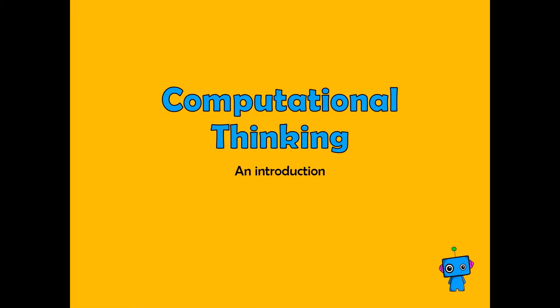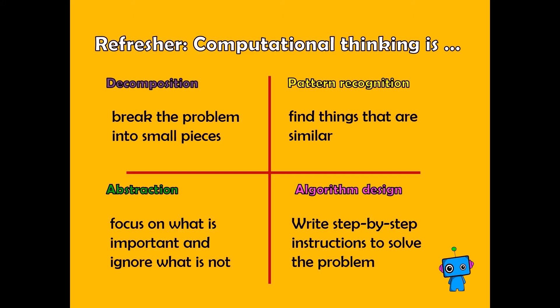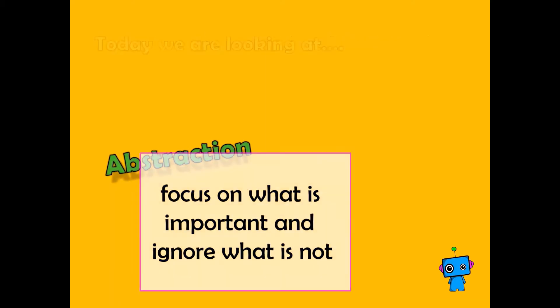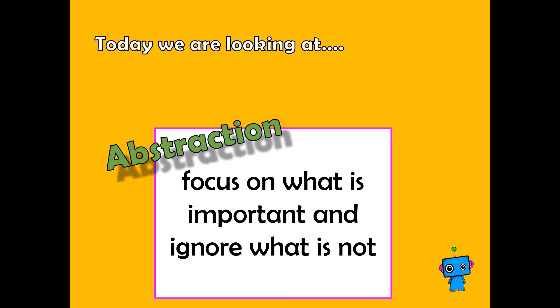Welcome back to the Introduction to Computational Thinking. As you remember, we've looked at composition, pattern recognition, algorithm design, and abstraction as the four elements of computational thinking. For this session, we are going to focus on abstraction — that is, focusing on what is important and ignoring what is not.